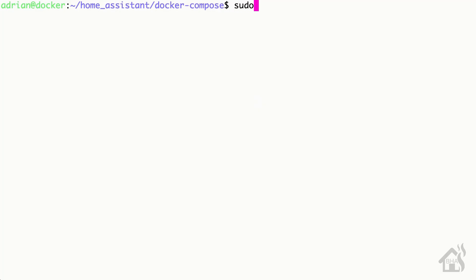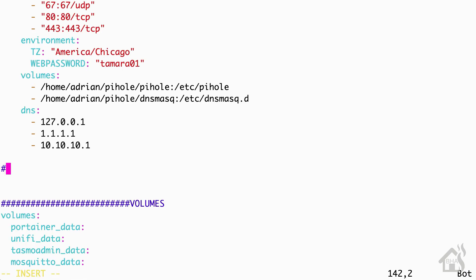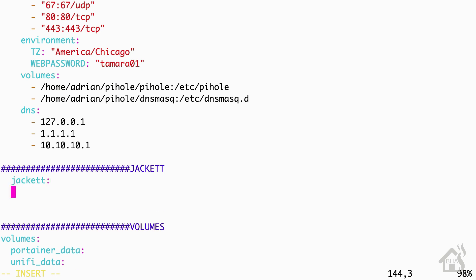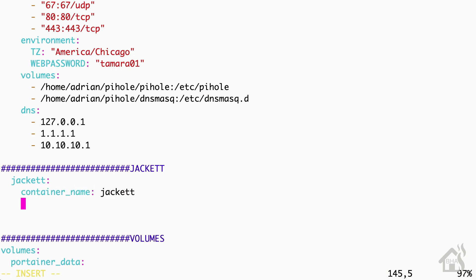We're going to install Jacket using Docker Compose, and I'll have everything in the description below so you can just copy and paste it. I'm going to edit my docker-compose.yaml file here, find an open spot down towards the bottom, and carve out a little section for Jacket. For the container name it will be jacket.